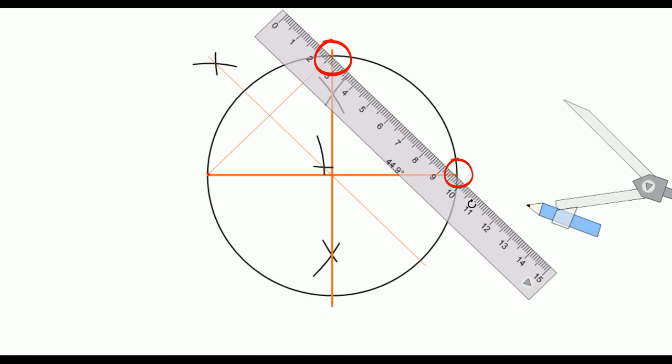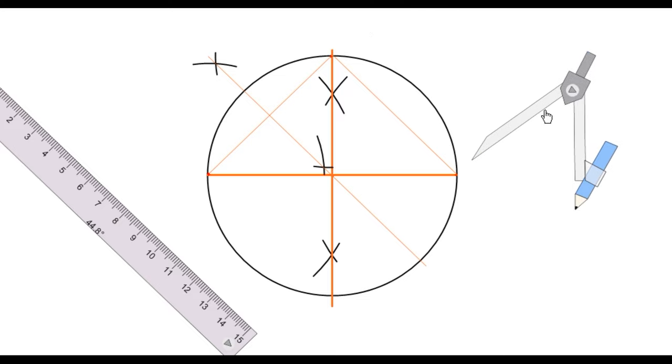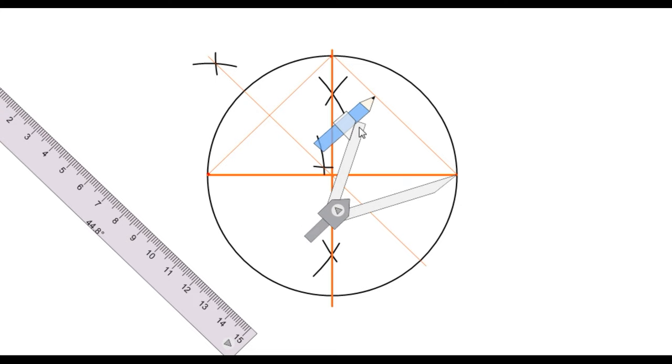We'll repeat this process with these two points. Let's connect these two points and draw a perpendicular bisector for this line segment. Taking more than half of the distance,